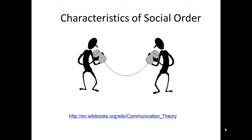Rogers states that: one, senders can be inventors or opinion leaders; two, the message can be a new idea or product; three, channels can be interpersonal or mass communication; four, receivers can be members of a social system; and five, the effects can be an individual's adoption of social change.